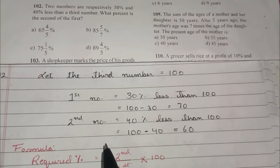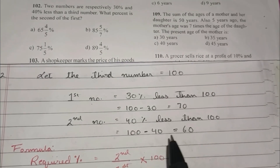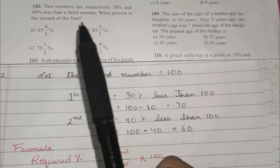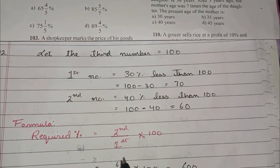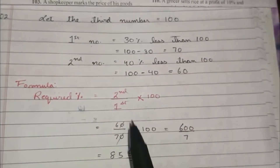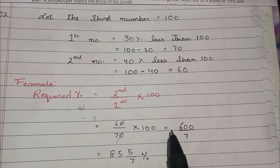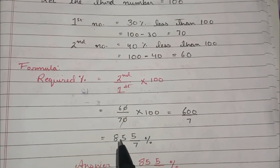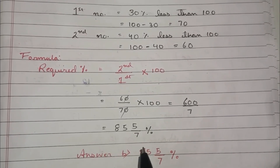Similarly, the second number is 40% less than the third number, so 100 minus 40 equals 60. To find what percent the second number is of the first number, we use: required percent equals second number divided by first number, into 100. Substituting: 60 divided by 70 into 100 equals 600 divided by 7, which gives 85 and 5/7 percent. Hence option B is the right answer.